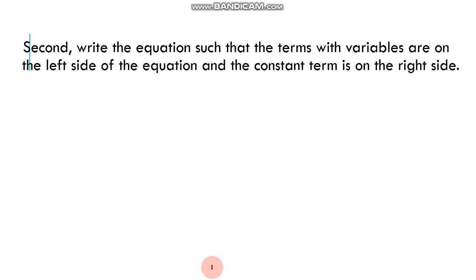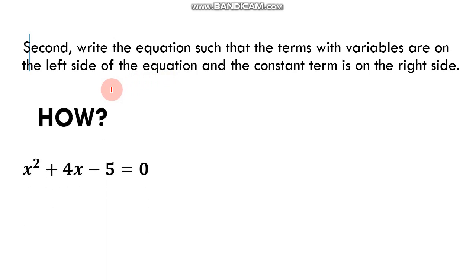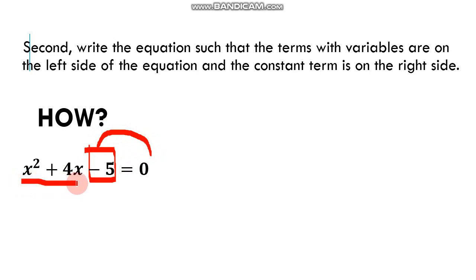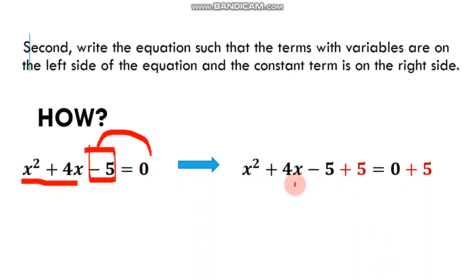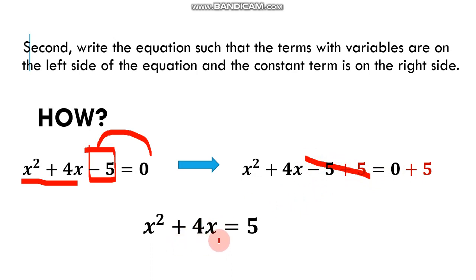Second step: write the equation such that the terms with variables are on the left side and the constant term is on the right side. From the equation x squared plus 4x minus 5 equals 0, the constant term will be transferred to the right side using additive inverse: x squared plus 4x minus 5 plus 5 equals 0 plus 5, which becomes x squared plus 4x equals 5.